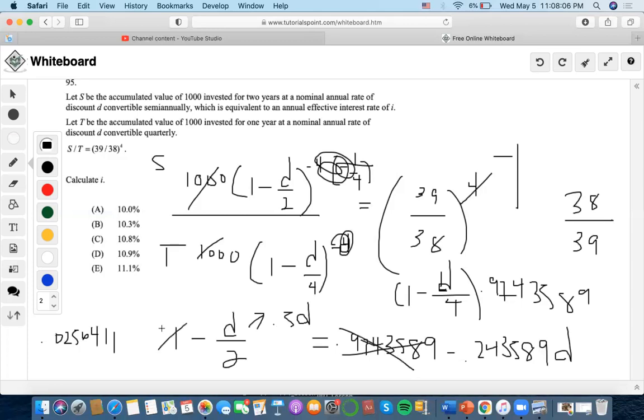Now I can move this to the other side by adding plus 0.5. So I'll do negative 0.243589 plus 0.5, which is 0.256411d.